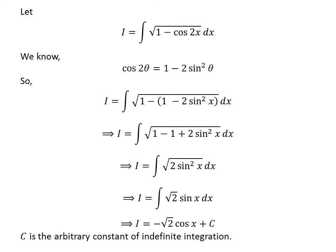Square root of 2 is a constant and the anti-derivative of sine of x is minus cosine of x, so I is equal to minus square root of 2 times cosine of x plus capital C. Capital C is an arbitrary constant of indefinite integration. Never forget to add this constant.